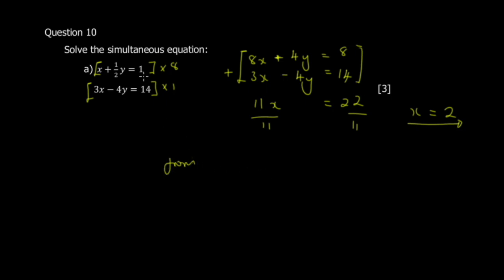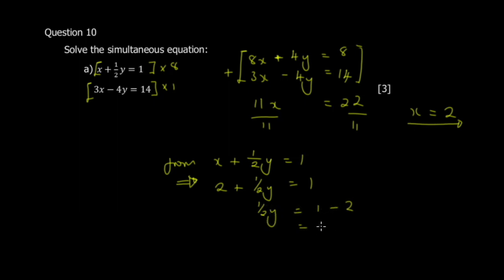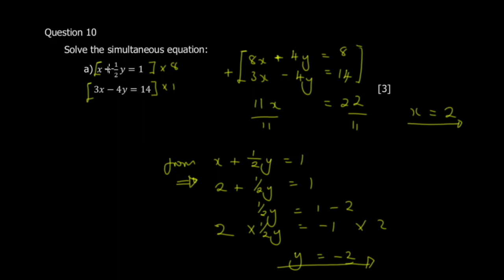Finding x is not the end — simultaneous equations require both x and y. Substitute x equals 2 into the first equation: 2 plus half y equals 1, so half y equals negative 1. Multiply both sides by 2 to get y equals negative 2. That is your answer. Substitution would have been messier due to the fraction. That's it for questions six to ten — in the next video we'll look at questions eleven to fifteen. Thanks for watching, remember to like, share and subscribe.